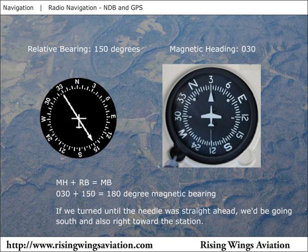Adding or subtracting 180 degrees from the magnetic bearing to the NDB gives the magnetic bearing from the station. In our example, 180 plus 180 gives us 360 degrees from the station, meaning the airplane is north of the station. Most pilots memorize the formula: MH plus RB equals MB, or magnetic heading plus relative bearing equals magnetic bearing.